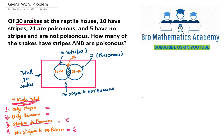It's given that 5 snakes have no stripes and no poison. It's also given that 10 have stripes. Some of those 10 snakes will also have poison, which we have assumed to be X. So how many of these 10 snakes will have only stripes? They will be 10 minus X, because X are those snakes which have stripes as well as poison.